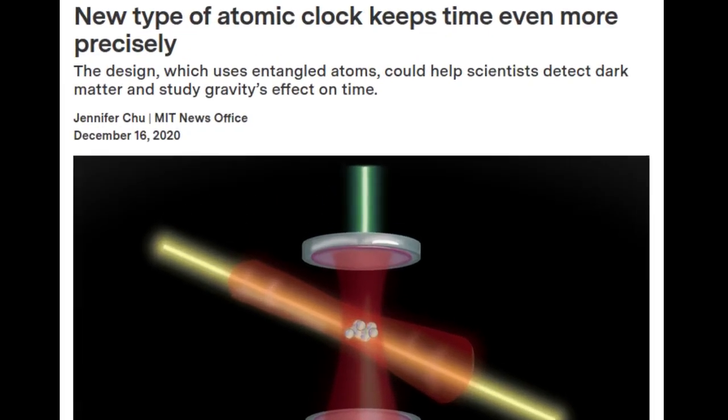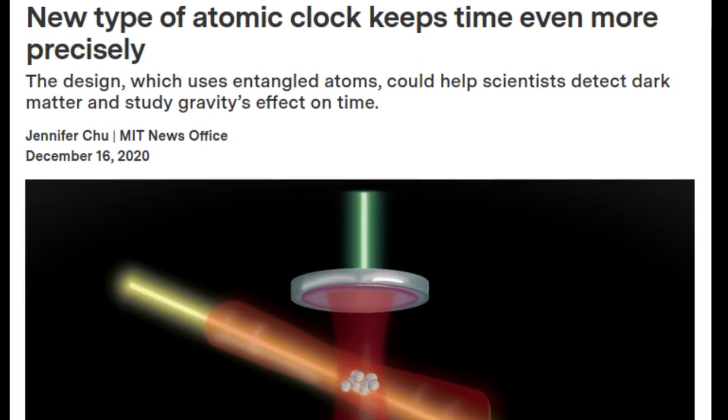Atomic clocks are the most precise timekeepers in the world. They use lasers to measure the vibrations of atoms, which oscillate at a constant frequency, like many microscopic pendulums swinging in sync.